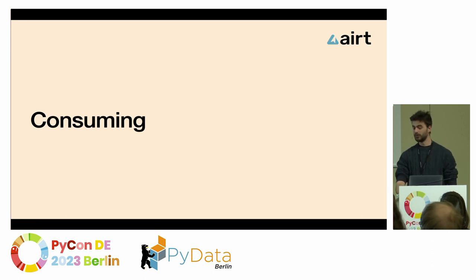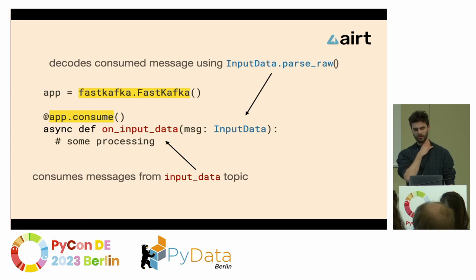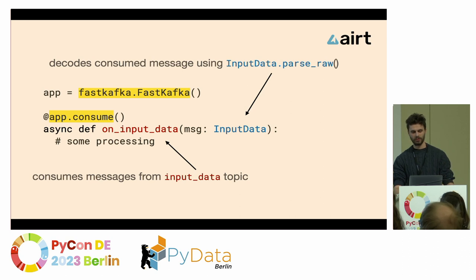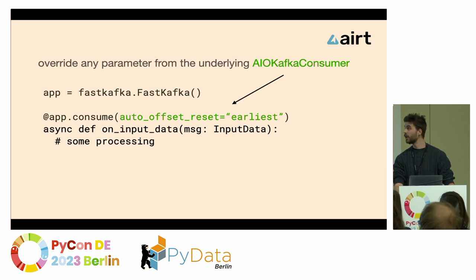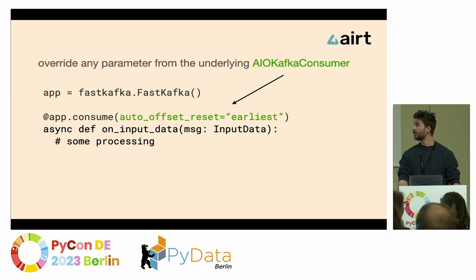So let's go to consuming. You can see we developed something that looks quite like FastAPI — you create your application, and with the consume decorator, you decorate your function, which will consume from the input data topic and decode incoming JSON messages into a Python class. If you want to use any of the advanced options with AIO Kafka, we've exposed them all in our consumer decorators, so you can always override the underlying AIO Kafka consumer.